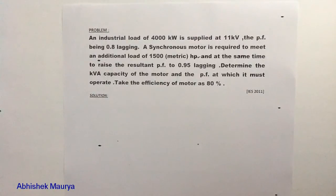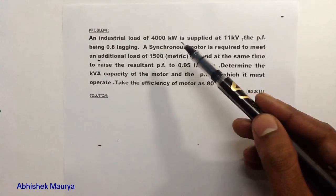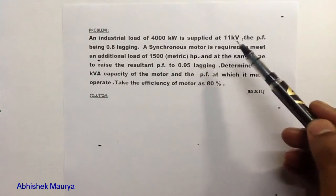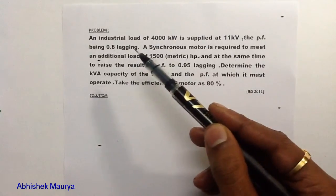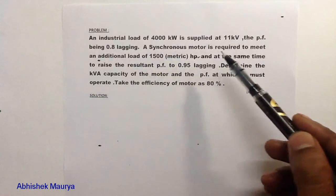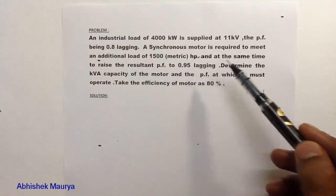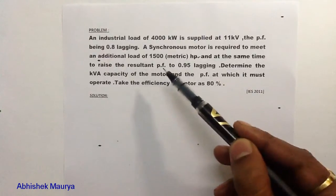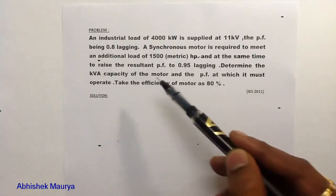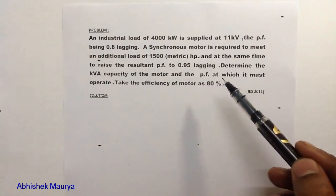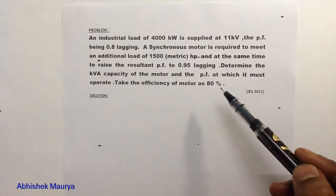Read this question very carefully. An industrial load of 4000 kW is supplied at 11 kV, the power factor being 0.8 lagging. A synchronous motor is required to meet an additional load of 1500 metric HP and at the same time to raise the resultant power factor to 0.95 lagging. Determine the kVA capacity of the motor and the power factor at which it must operate. Take the efficiency of the motor as 80%.